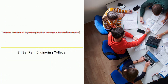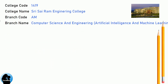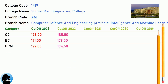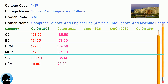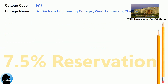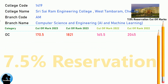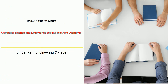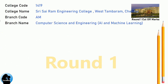DNA Cut-off for Shri Sairam Engineering College in Computer Science and Engineering, Artificial Intelligence and Machine Learning. DNA 7.5 Reservation Cut-off for Shri Sairam Engineering College in Computer Science and Engineering, AI and Machine Learning. DNA Round 1 Cut-off for Shri Sairam Engineering College in Computer Science and Engineering, AI and Machine Learning.